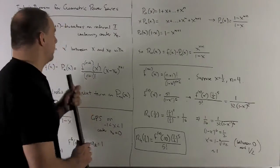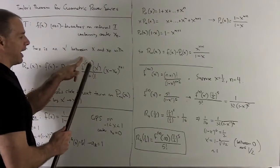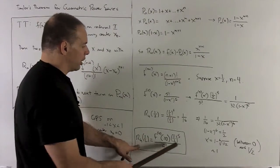And that's what the theorem promises. We're going to find an x prime that lives between your x and your x0, x0 is 0, x is 1 half, such that you get this equation holding.